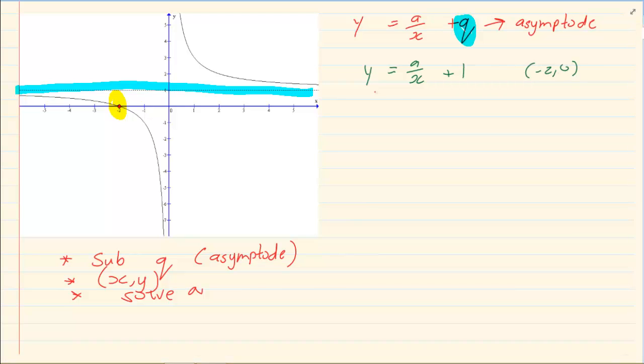So we're going to substitute our point. We've got 0 = a/(-2) + 1.